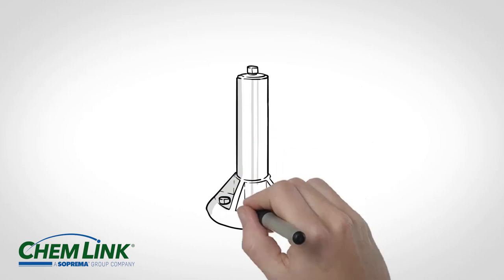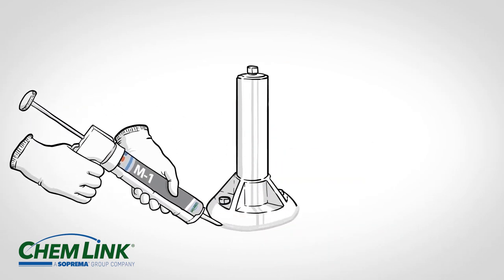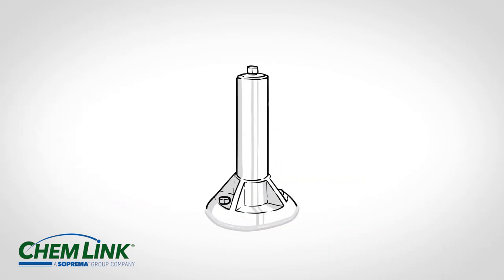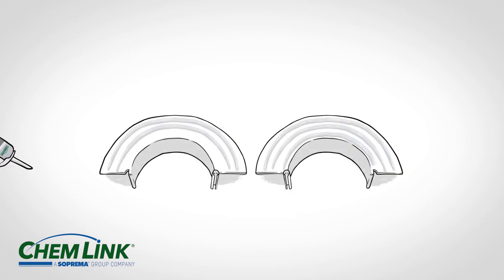Start by applying M1 universal adhesive and sealant to the base of the post. Cover the outside of the base and bolts. Apply product 3 inches up the post and completely cover the base.